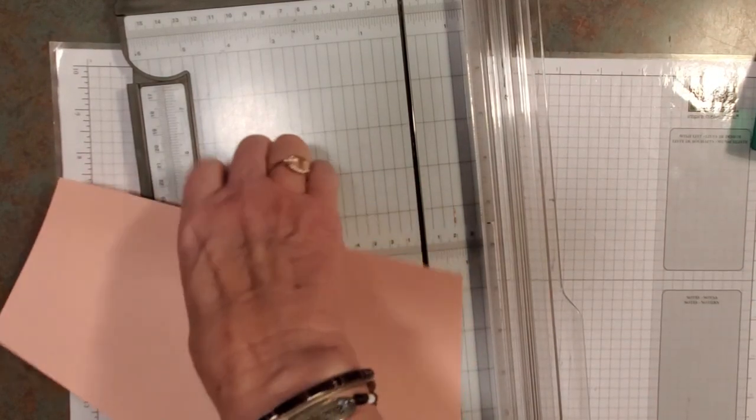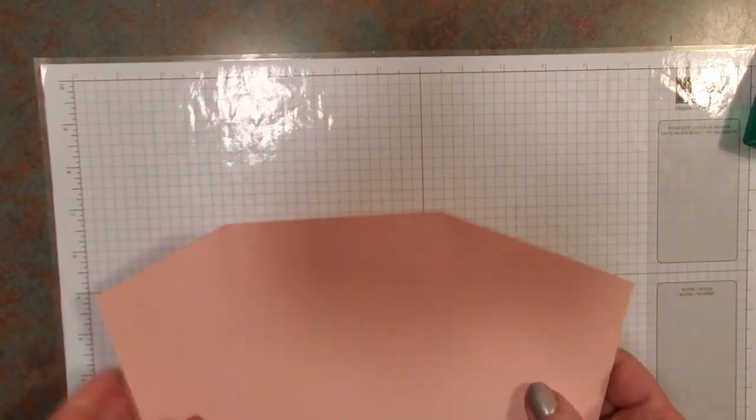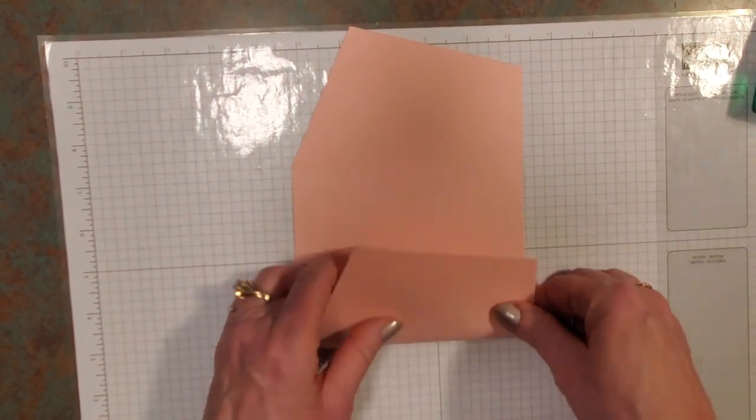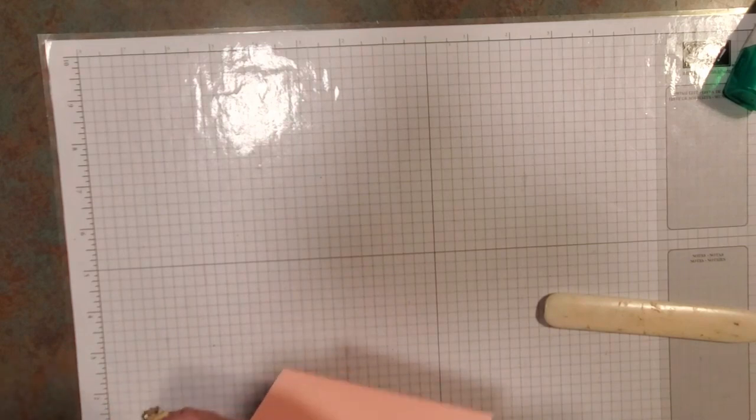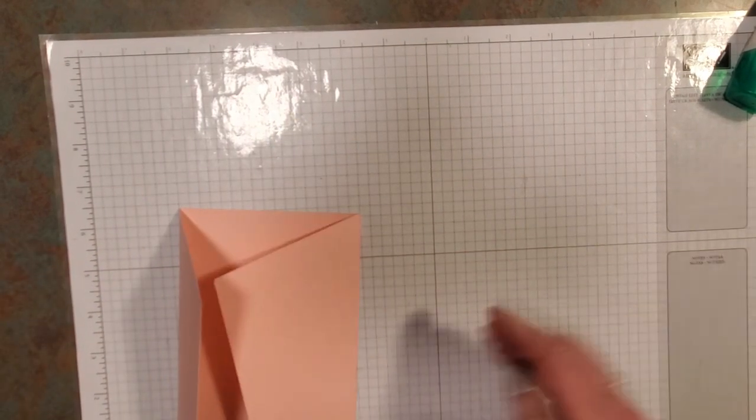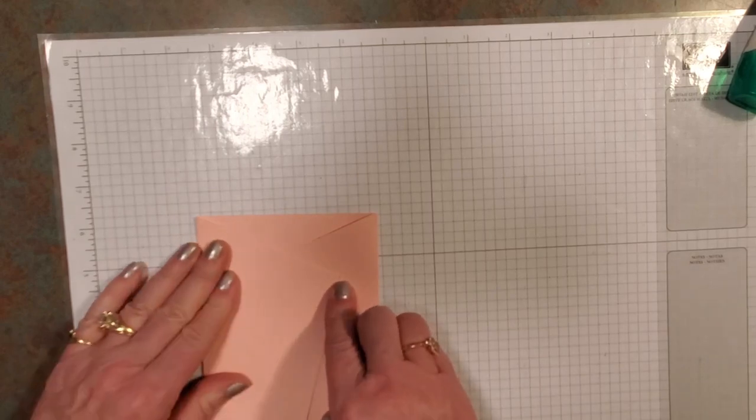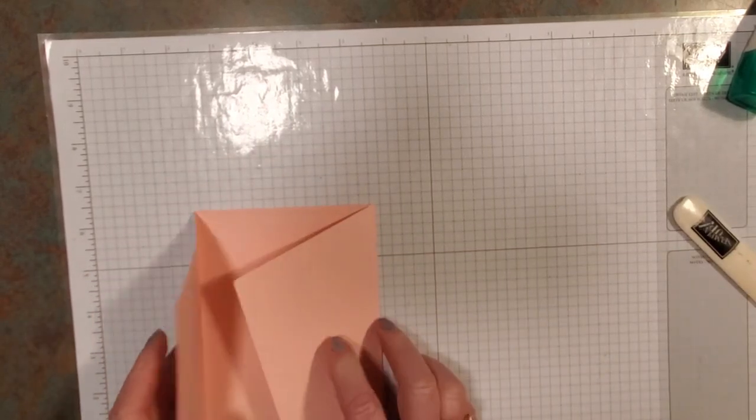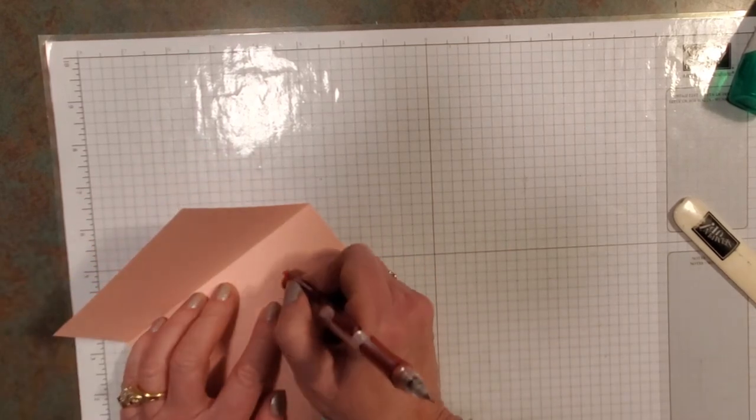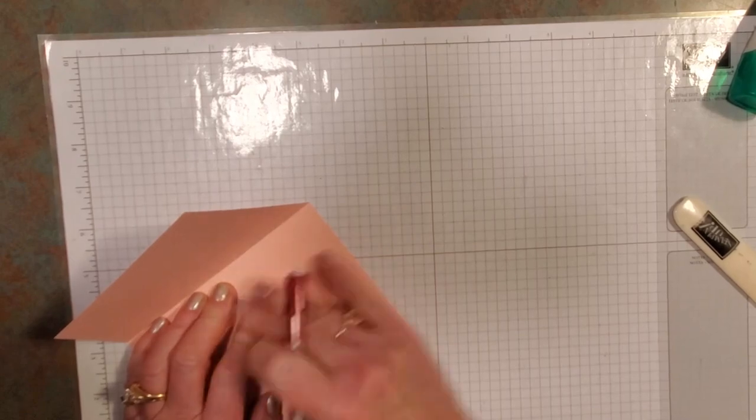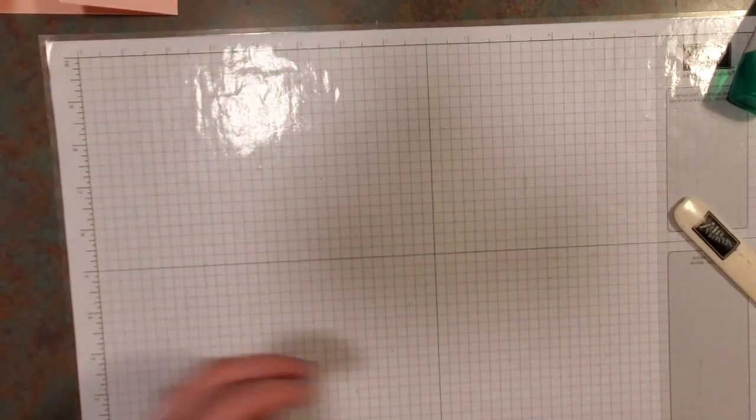One thing to remember, too, is don't start up here in the point because you'll chew up your card. Always start where you have more card to cut. And just go like that, and I missed it just a little bit, but it'll be okay. So, now we have a very funny shaped piece. Isn't that a fun card right there? So, we're going to move that out of the way for a minute, and I am going to actually score these now.